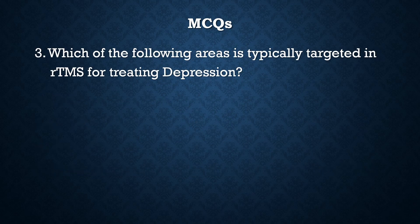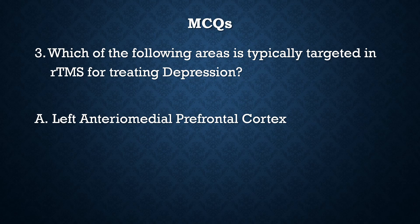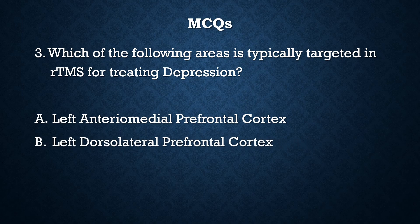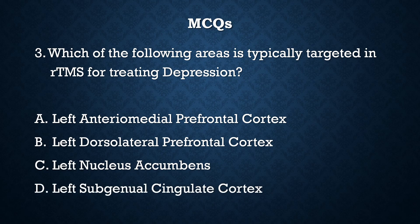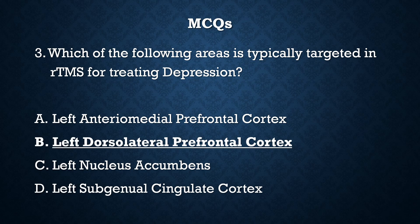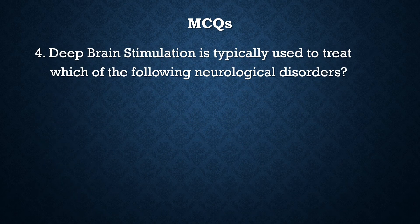Question 3: Which of the following areas is typically targeted in repetitive transcranial magnetic stimulation for treating depression — the left anteromedial prefrontal cortex, the left dorsolateral prefrontal cortex, the left nucleus accumbens, or the left subgenual cingulate cortex? The correct answer is B — the left dorsolateral prefrontal cortex. This is the area typically targeted in rTMS for treating depression.